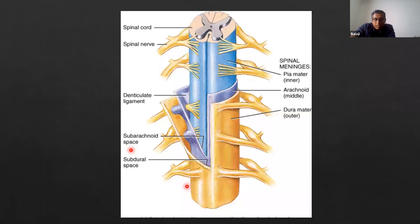The spinal cord has three coverings: the dura, arachnoid, and pia mater. The spinal nerves come out from the spinal cord and run out between each level of the vertebrae.